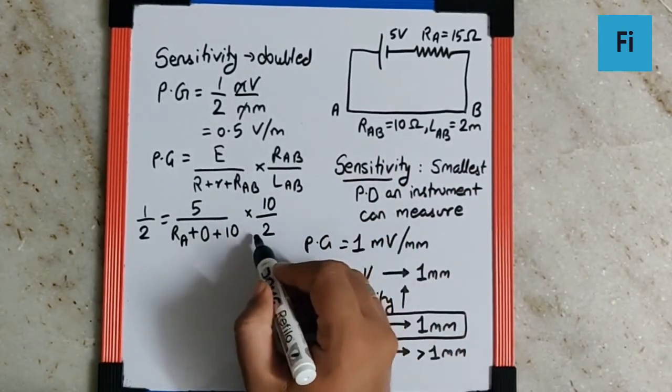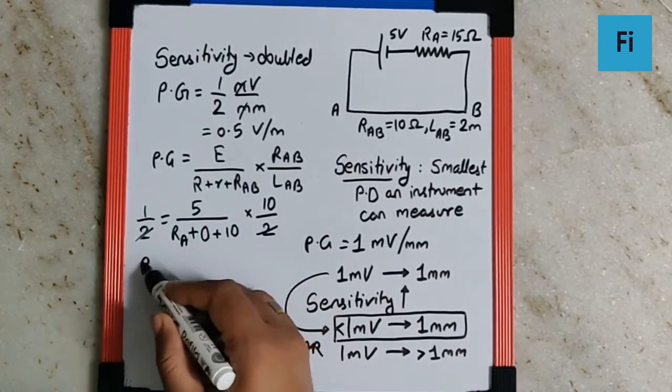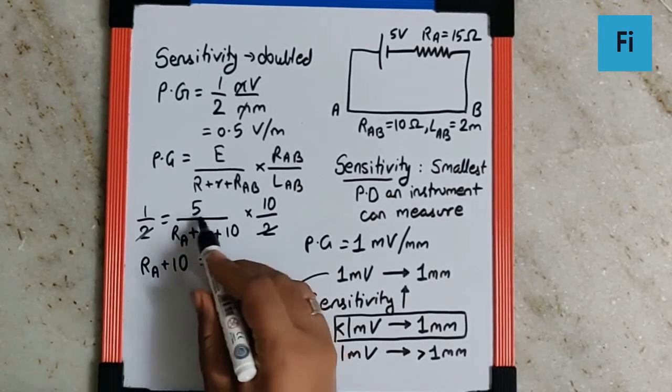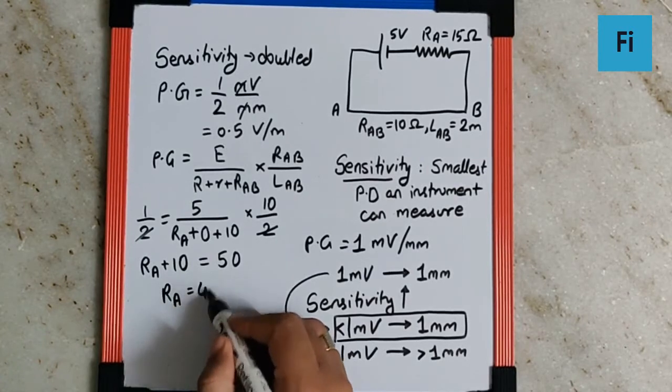So we can cancel this part and can say RA plus 10 is equal to 50, which means RA is equal to 40 ohm.